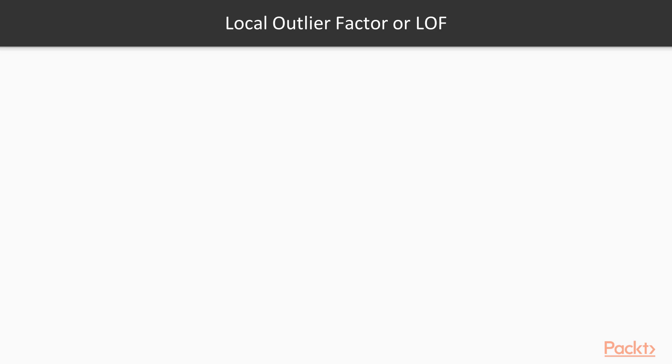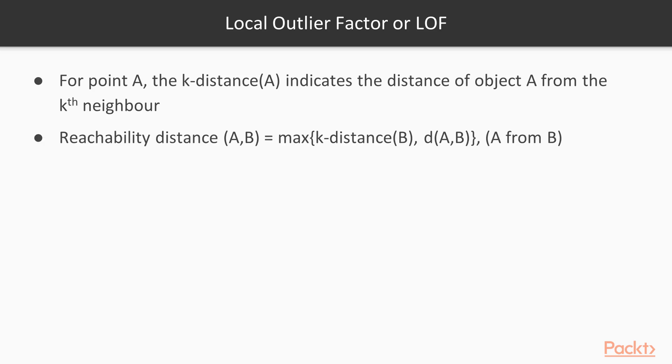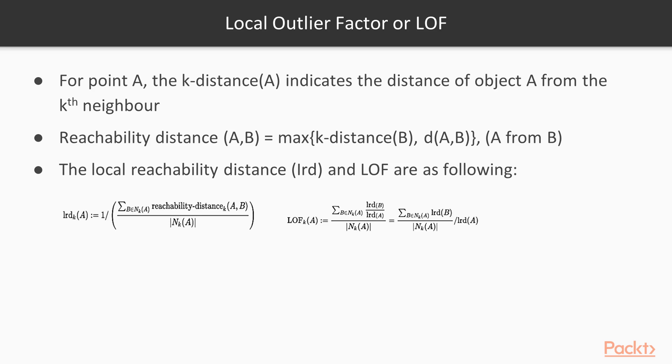In the LOF method, there are a few terms that must be introduced first. For point A, the k-distance of A indicates a distance of object A from its neighbor. The reachability distance of the pair A and B is defined as the maximum of the k-distance of B, and the regular distance D of A and B, like the Euclidean distance of A from B. The local reachability distance, or LRD, and LOF are defined as the formulas that you can see here. If LOF of k is bigger than 1, it means that point A has lower density than its neighbors, and it is an outlier which is detected in this way.